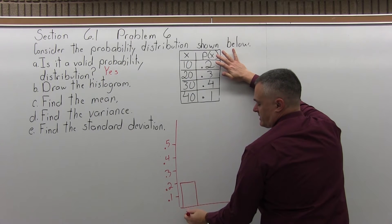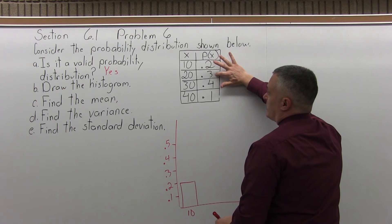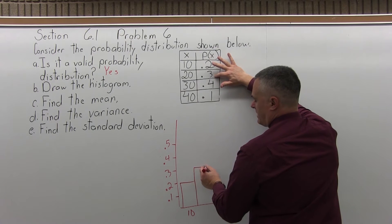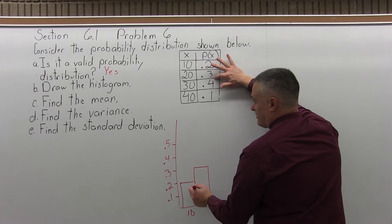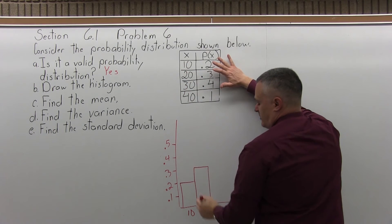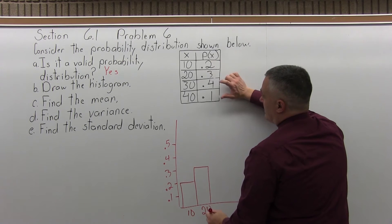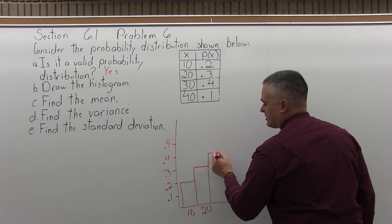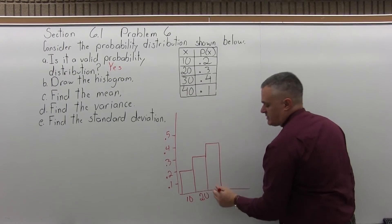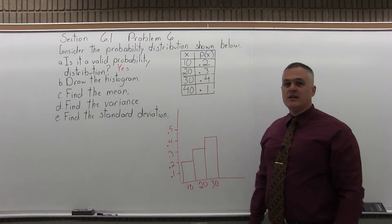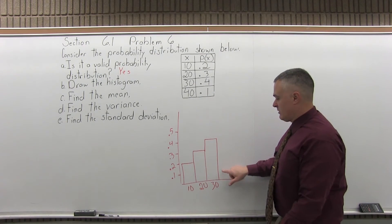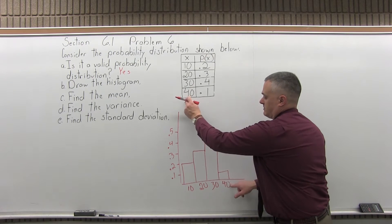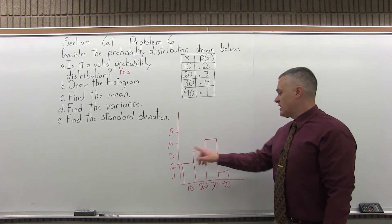The number from the first column goes right under the center of that bar. The next bar will go to a height of 0.3, because it has a probability of 0.3. So 0.3, my graph, I go to that height. The bar, of course, touches the previous bar. The number under the center of that bar is the number from the first column, which is 20. The next bar has the biggest height, which is 0.4, because that's its probability. So 0.4, again, I'm going to make them touch. The number from the first column is 30, so that goes right under the center of the bar. And the last bar just has a height of 0.1, because its probability is 0.1. 0.1, go to that height, keep the bars touching. The number from the first column, which is 40, goes under the center of that bar. So that's B, draw the histogram, there it is.